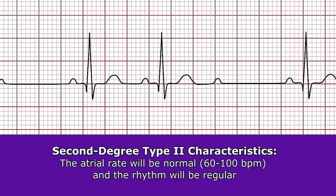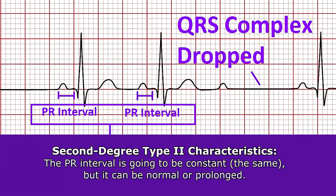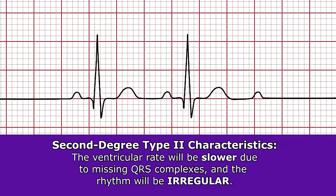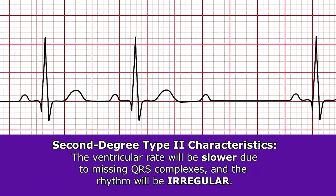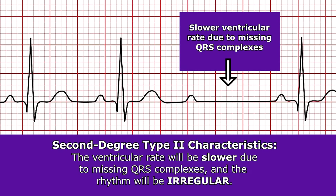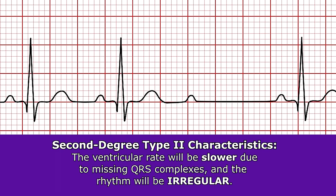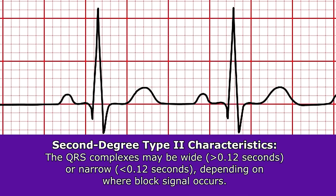For the characteristics of second-degree type 2: the atrial rate is normal at 60 to 100 beats per minute with a regular rhythm. The PR interval is constant — staying the same throughout — and can be normal or prolonged. The ventricular rate is slower, less than 60 beats per minute, because QRS complexes are missing, making the ventricular rhythm irregular. When QRS complexes do appear, they can be wide, greater than 0.12 seconds, or narrow, less than 0.12 seconds, depending on where the block is within the conduction system.